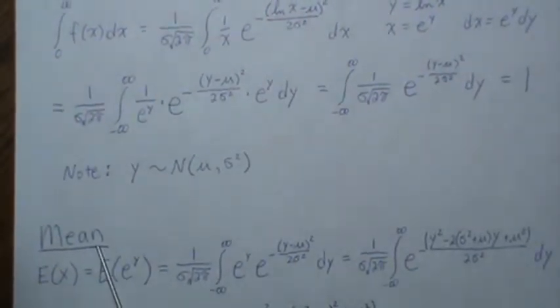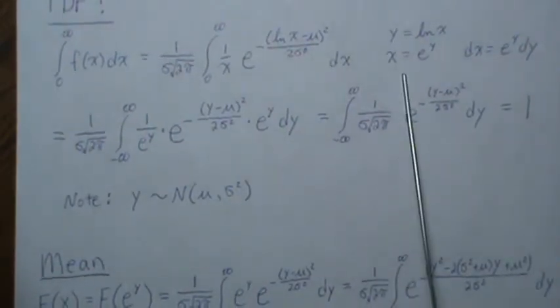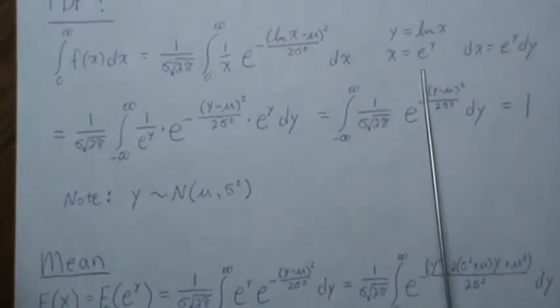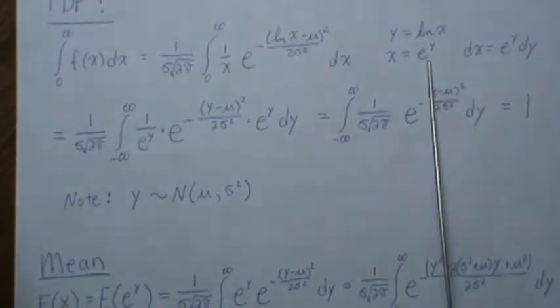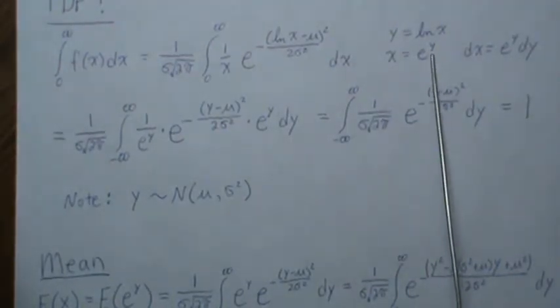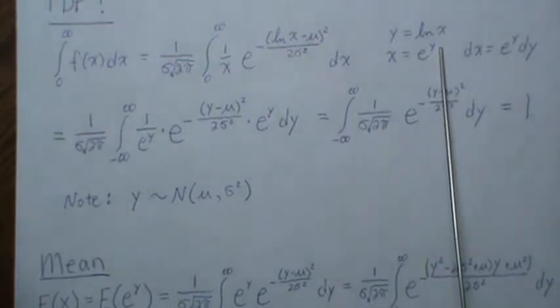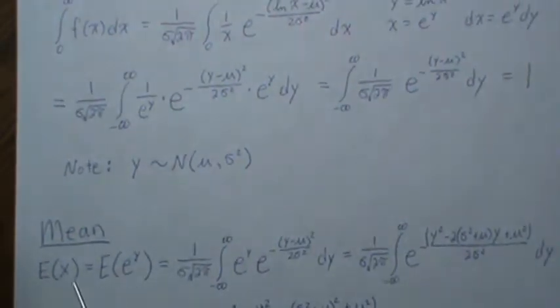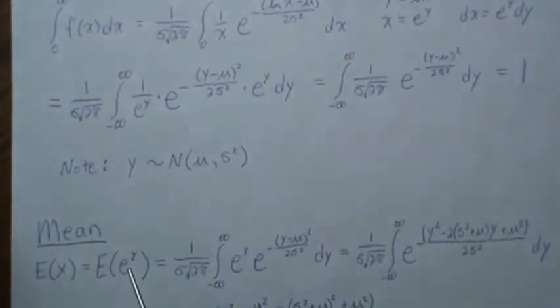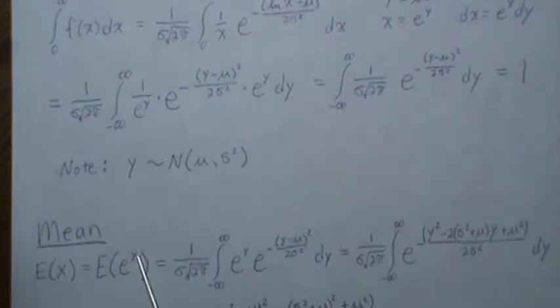So let's look at the mean. Let's find the expected value of X. But if we make this transformation, X equals e to the Y, and we know Y is normally distributed, then when we go from here to here, we need to take its expectation in regards to Y.